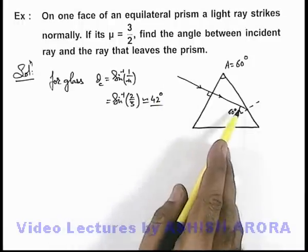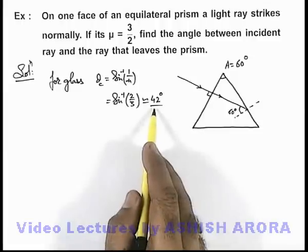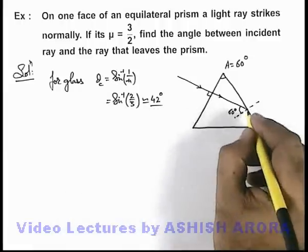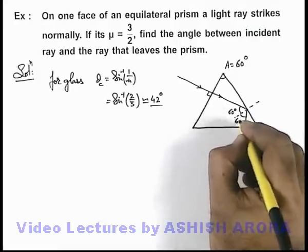So here the incidence angle at the glass to air interface is 60 degrees, which is more than the critical angle. That means it will be reflected according to laws of reflection at an angle of 60 degrees.